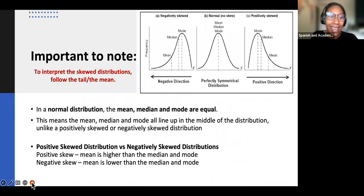All right, so here it is again. Important to note, to interpret the skewed distributions, you always follow the mean or follow the tail. Where is the mean located? If it's closer to the left, the mean is lower. That's a negatively skewed. If the mean is closer to the right, it's a positively skewed. Remember that the mean, the median, and the mode are also referred to as the measures of central tendency. So you might see a test question that says, which of the distributions have the measures of central tendency all line up? That would be a normal. Which type of distribution has the measures of central tendency not lined up? That would be a negatively skewed or positively skewed.